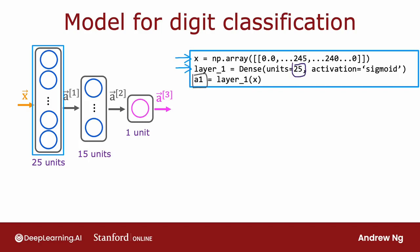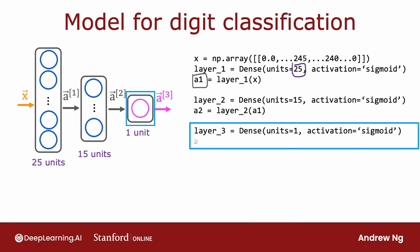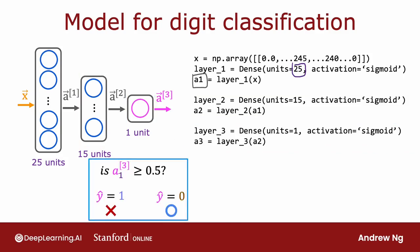To build and carry out inference through the second layer, similarly, you set up layer two as follows. And then compute a2 as layer two applied to a1. And then finally, layer three is the third and final dense layer. And then finally, you can optionally threshold a3 to come up with a binary prediction for y hat.